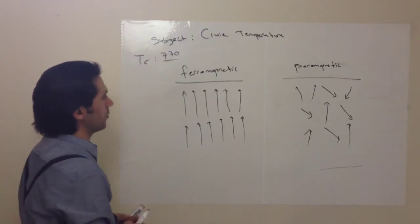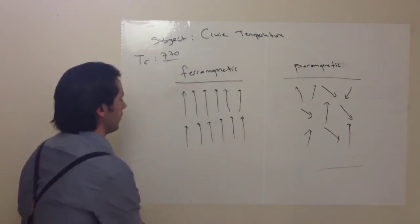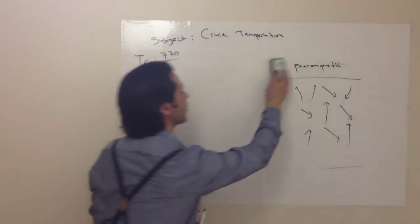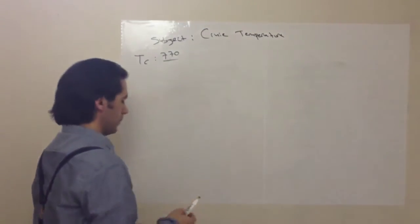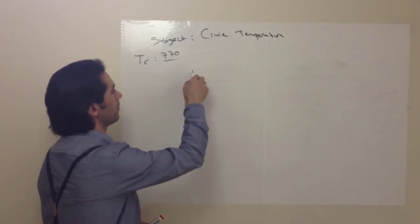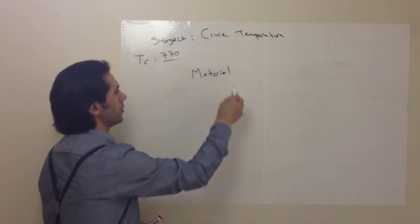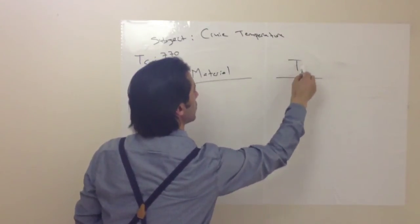So we can explain it like that: ferromagnetic material becomes paramagnetic. Now I'd like to give you some examples. For example, a material and this is Curie temperature.